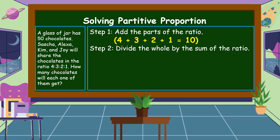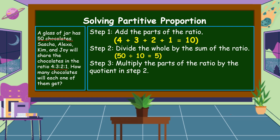Step 2: Divide the whole by the sum of the ratio. 50 divided by 10 is equal to 5. Step 3: Multiply each part of the ratio by the quotient. 4 times 5 is 20; 3 times 5 is 15; 2 times 5 is 10; and 1 times 5 is 5. Adding all products: 20 + 15 = 35, + 10 = 45, + 5 = 50. This equals our original 50 chocolates, confirming our answer.